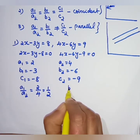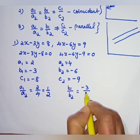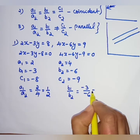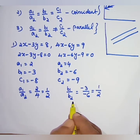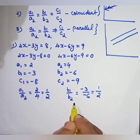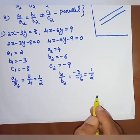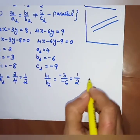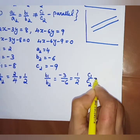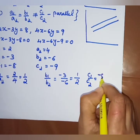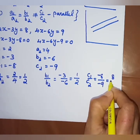Now computing: a1/a2 = 2/4 = 1/2. B1/b2 = −3/−6 = 1/2. C1/c2 = −8/−9 = 8/9. So a1/a2 = b1/b2 = 1/2, but c1/c2 = 8/9.